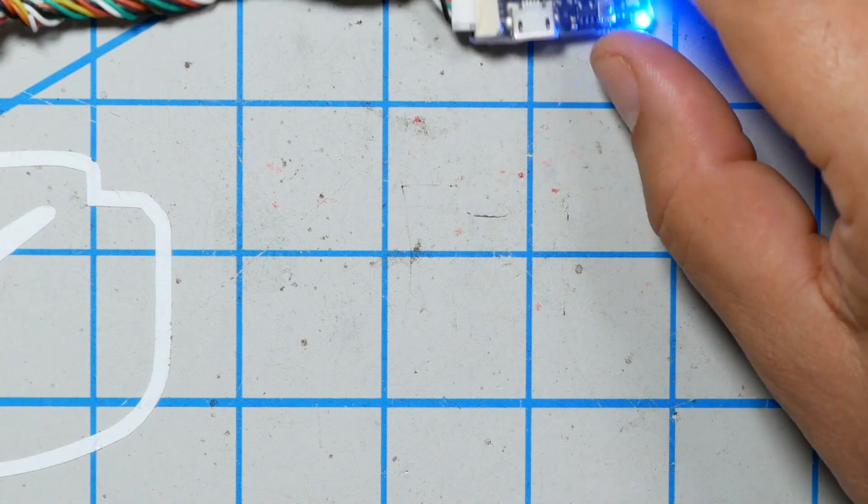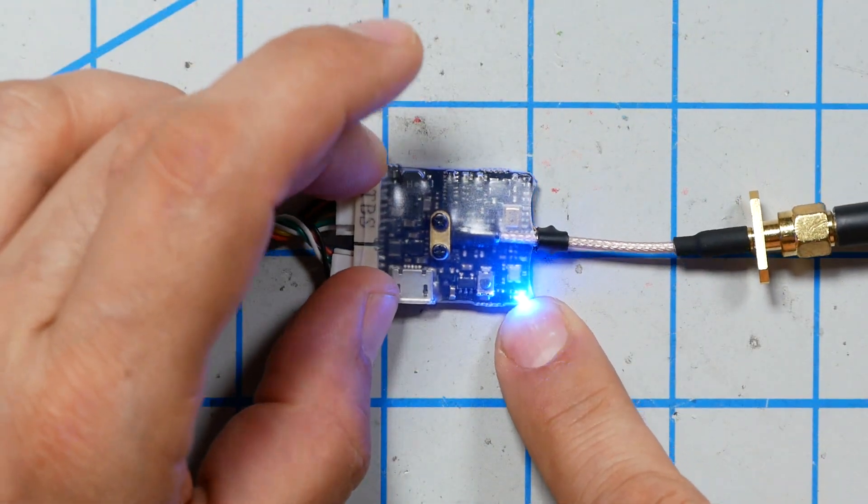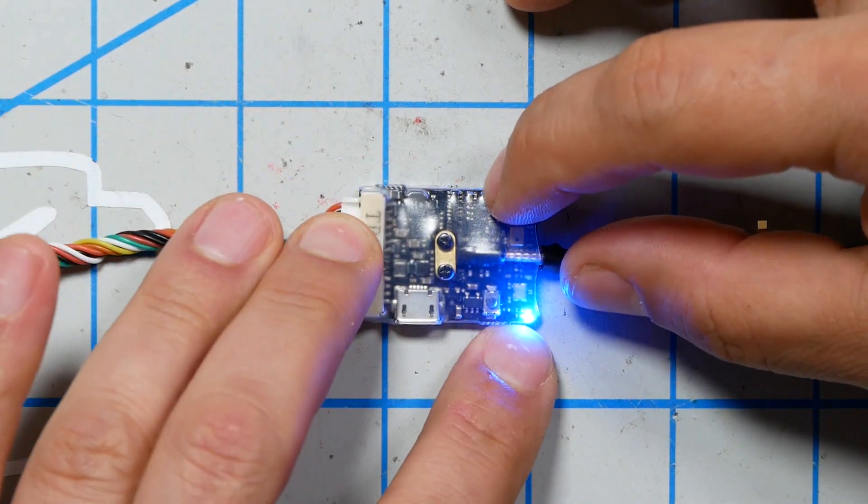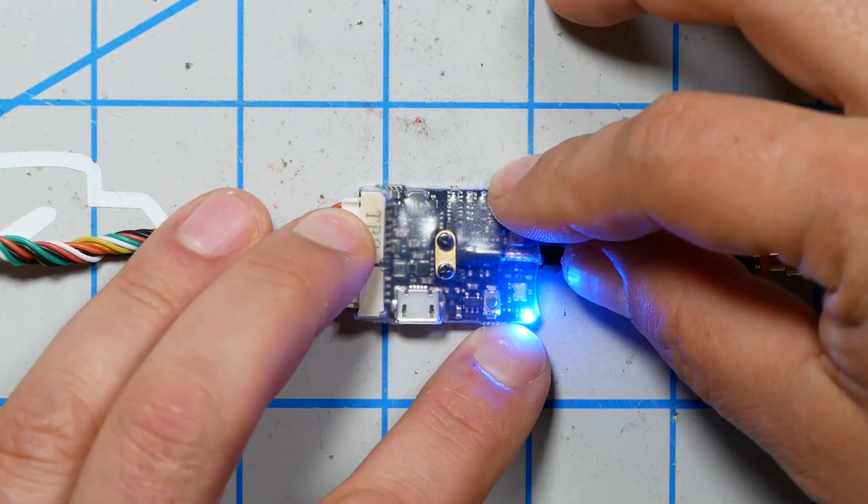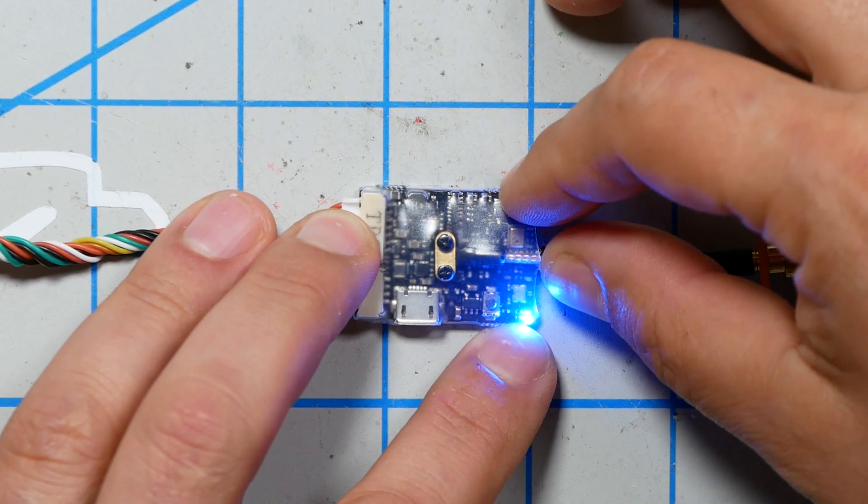And if you can't go above 25 milliwatts or you can't go to certain channels, that is why. So here I'm going to show you how to unlock the TBS Unify Pro32 Evo. I think this is pretty much the same for the other Pro32 video transmitters.